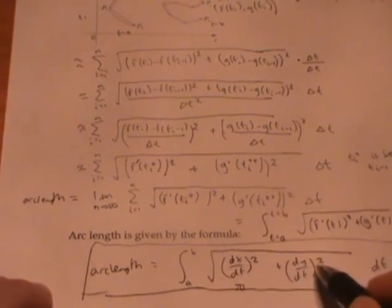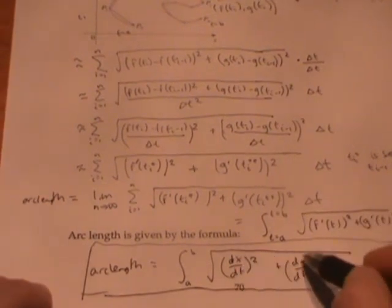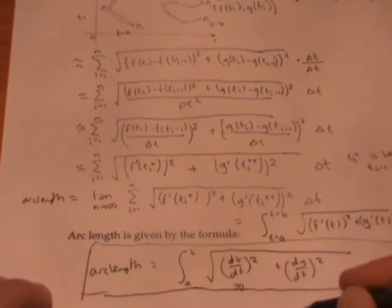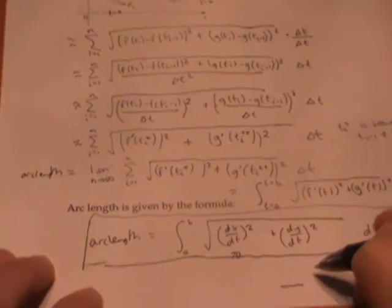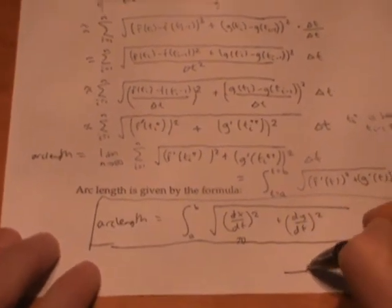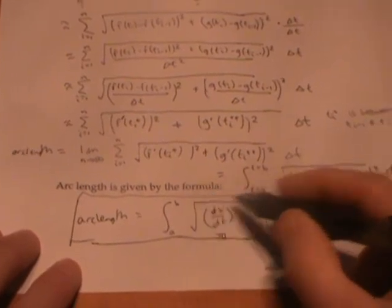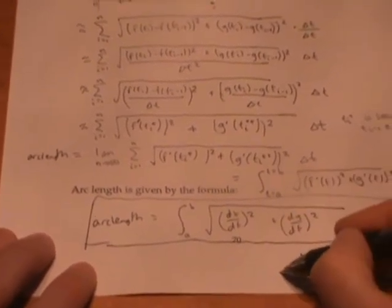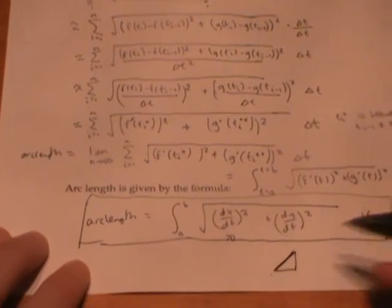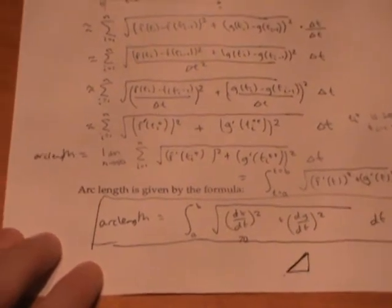It should make intuitive sense because dx/dt is measuring your change in the x direction and dy/dt is measuring your change in the y direction. So this square root quantity is just a little incremental piece of your curve.